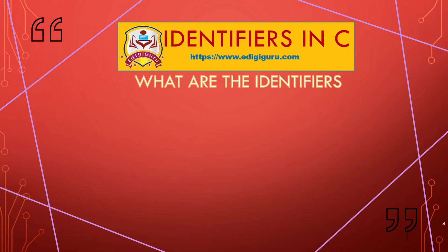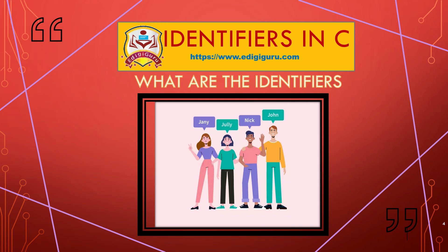First, we will look at what identifiers are. As we all know, a computer can understand only binary language — it can only understand zeros and ones, and can store data in the form of numbers. But we can all easily remember names instead of numbers. For example, in a class of 60 students, a teacher could more easily remember student names than roll numbers — like John, Janny, or Nick — rather than each student's roll number.